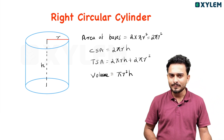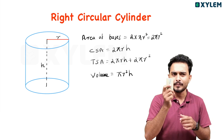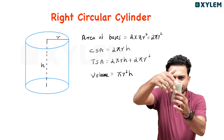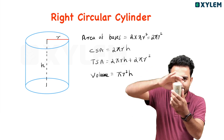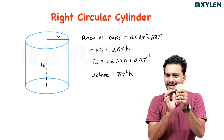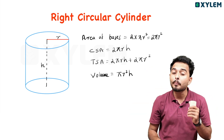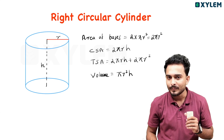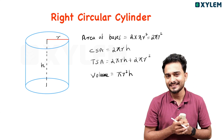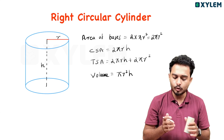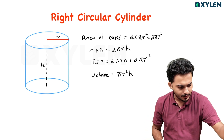Surface area of cylinder — total surface area and curved surface area. The curved surface area is 2πR into H. That is the circumference into height — circumference into height.